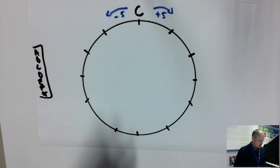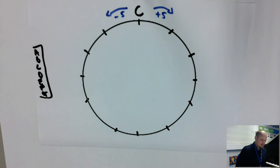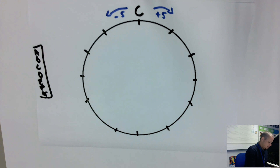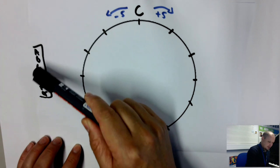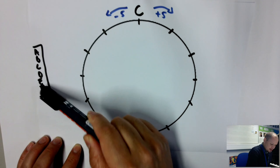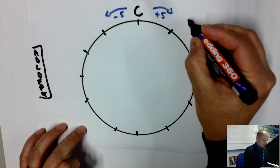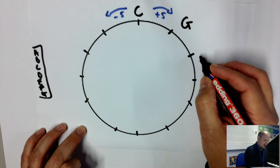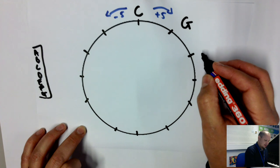Let's get started on our circle of fifths. We start at C, so we count up five from C: C, D, E, F, G — that's G major, our first sharp key with one sharp, at one o'clock. Count up five again from G: G, A, B, C, D — D major has two sharps.